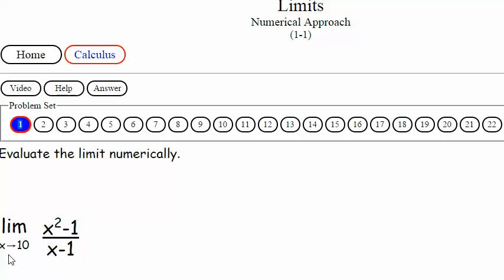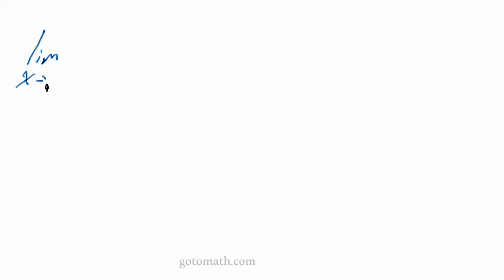This says the limit as x approaches 10 of x squared minus 1 over x minus 1. So let me write this out on the whiteboard: the limit as x approaches 10 of x squared minus 1 over x minus 1.